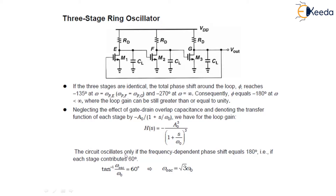The circuit oscillates only if the frequency-dependent phase shift equals 180 degrees. This is given by the Barkhausen criteria: if the phase shift equals 180 degrees, the circuit oscillates. That means each stage must contribute 60 degrees. So we want the total phase shift to equal 180 degrees, with each stage contributing 60 degrees. Thus tan⁻¹(ω_osc / ω₀) = 60°, which gives ω_osc = √3 · ω₀. This is the frequency at which the circuit oscillates.